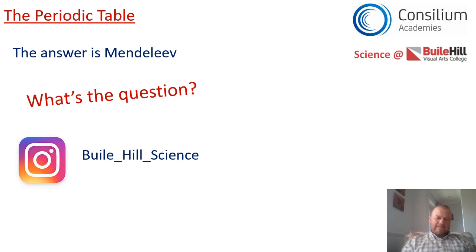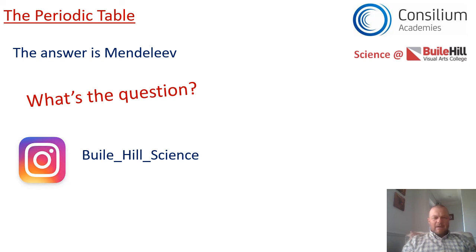If the answer to a question was red, the question could be: what colour means stop on traffic lights, or what colour kit do Man United wear? The answer to this question is Mendeleev — what I'd like you to do is write me the question. Email it to your teacher, or share it with us on Instagram on the Buile Hill Science Instagram page. Hope you found today's lesson useful. Take care, everybody. Bye!